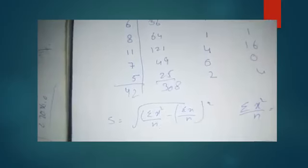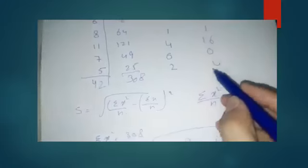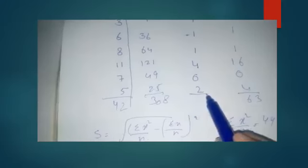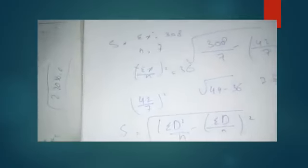Now for the d-method: d equals x minus a, where a is mostly the mid value. In this example, a is given as 7. So the first step is to calculate x minus 7: 2 minus 7, 3 minus 7, 6 minus 7, and so on to get the d values. The next step is to find d squared.